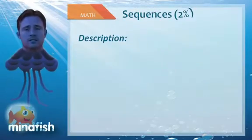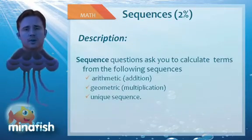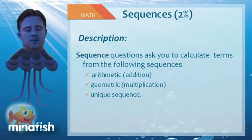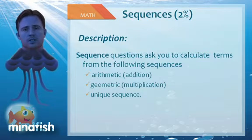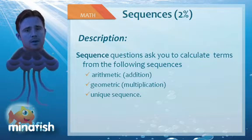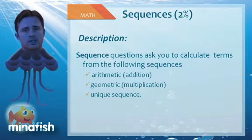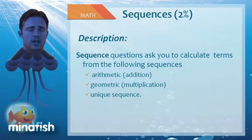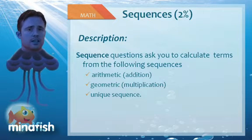Alright, hello. We're going to be talking about sequences. Sequence questions pretty much deal with three types of sequence: arithmetic sequences, geometric sequences, and unique sequences. Arithmetic sequences deal with addition. Geometric sequences deal with multiplication. And unique sequences are made up by the SAT.